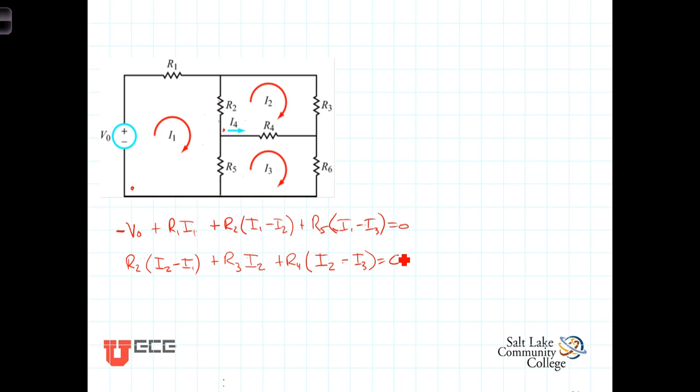Finally, we do a KVL around this bottom mesh. Starting here, we'll have R5 times the current flowing through R5 in the direction we're going, which is I3 minus I1, plus coming across here, plus R4 times the current flowing left to right in R4 in terms of the mesh currents, which is I3 minus I2. And then finally the current coming down here through that R6 will be R6 times I3, and the sum of those currents equals zero.